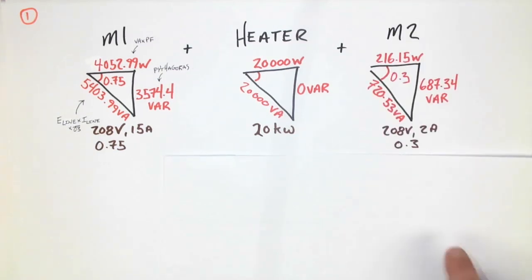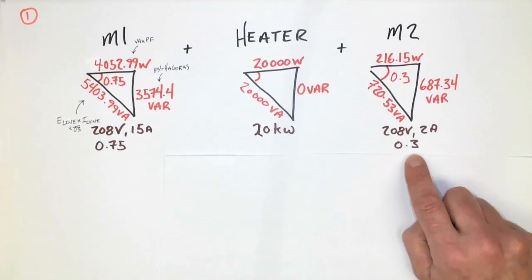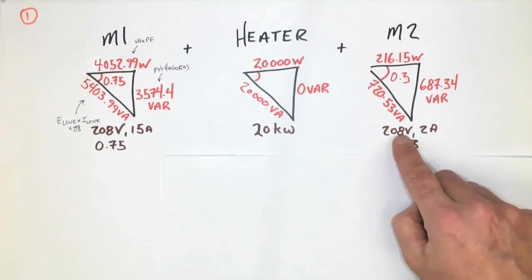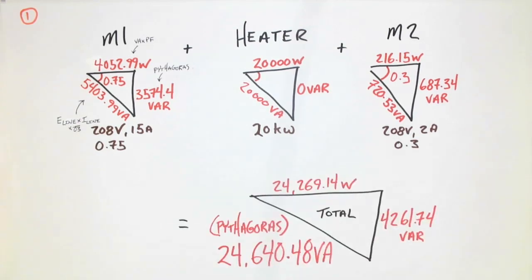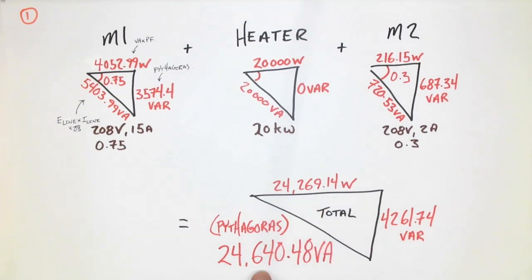The next item is motor two — 208 volt, 2 amp, 0.3 power factor. I multiply the two values times root three to get my VA, then use the power factor to get my watts and Pythagoras to get my VARs. Once I do all of that, I add all the verticals and all the horizontal components. Since we have all inductive loads, the VARs will all add together, giving us a total of about 24,000 watts and 4,261 VARs. Using Pythagoras with these two values, I get 24,640 VA.